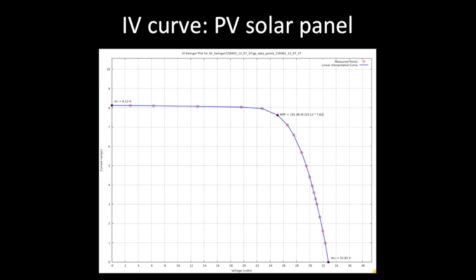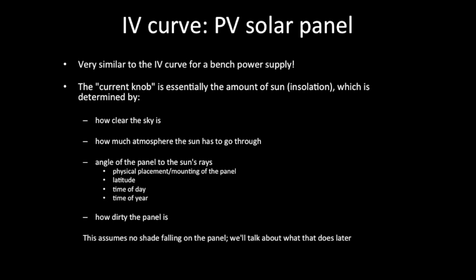What we're really interested in is what the IV curve looks like for a solar panel. This is actually the IV curve generated by the IV Swinger. You notice that it's very similar to the IV curve for a bench power supply — a flat top and a flat side, essentially a rectangle, but it curves because it's not ideal.